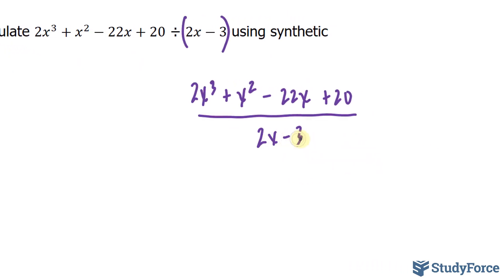I'll start by factoring out a 2 from this bottom expression. We have 2x minus 3. Factoring out a 2 gives us a common factor of 2, followed by x minus 3/2 in parentheses. And the goal here is to eliminate this factor with a 2 at the top.